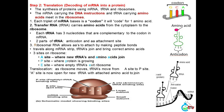Step 2: Translation — decoding of mRNA into a protein; the synthesis of proteins using mRNA, tRNA, and ribosomes. The mRNA carrying the DNA instructions and tRNA carrying amino acids meet in the ribosomes. (1) Each triplet of mRNA bases is a codon; it will code for one amino acid. (2) Transfer RNA (tRNA) carries amino acids from the cytoplasm to the ribosome. Each tRNA has three nucleotides (anticodon) complementary to the codon in mRNA, and an amino acid attachment site. (3) Ribosomal RNA allows amino acids to attach by making peptide bonds; it travels along the mRNA strip while tRNAs join and bring correct amino acids.